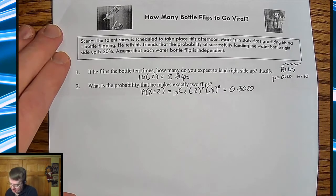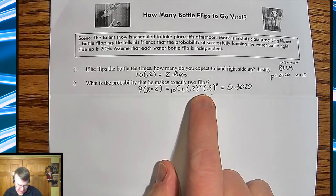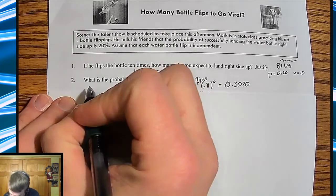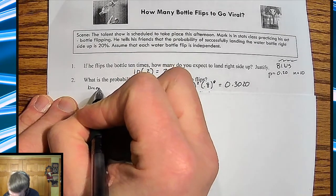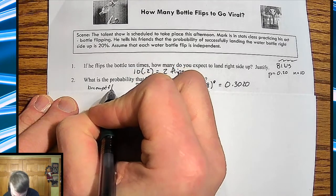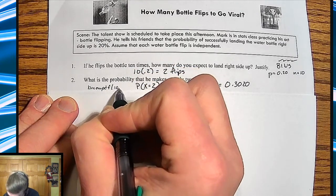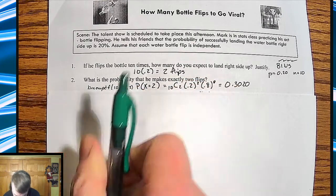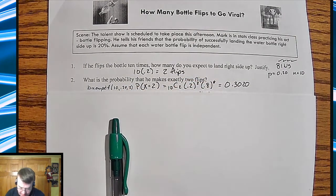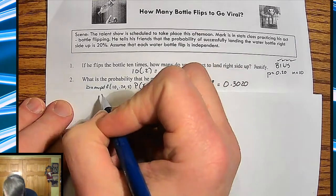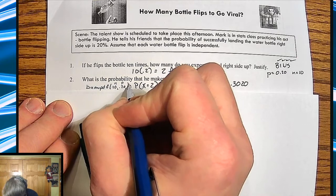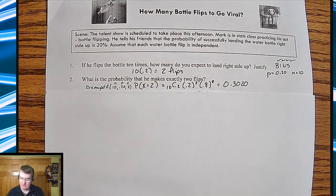What's the probability they make exactly two flips? There is the formula. You can go through if you want to and go ahead and use your binomial PDF if you wanted to. And then again, you've got 10, 2, 0.2. And again, go through and label out what each part is. So this is going to be, again, N, and then P, and then X.